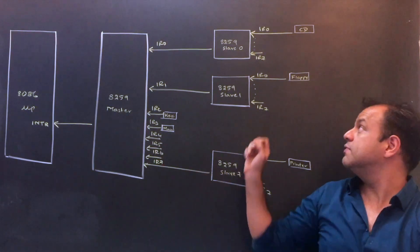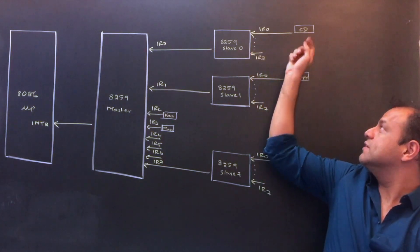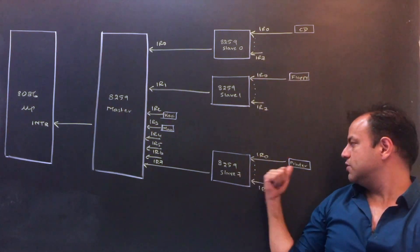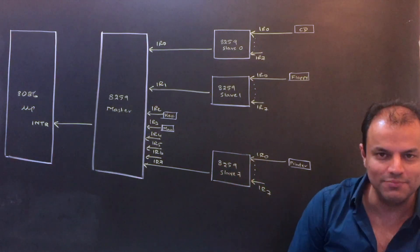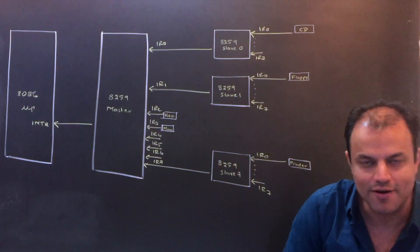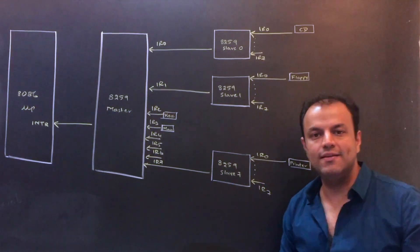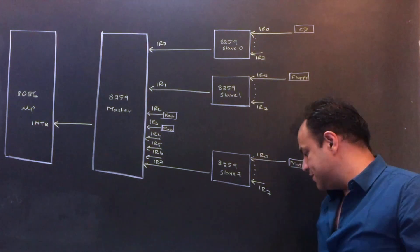IR-7 has another slave. On this slave at IR-0 there is a CD. On this one there is a floppy. On this one there is a printer. They could be X, Y, Z - I'm just using names for reference. The point is we need to understand the interrupts. It could be any device.